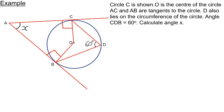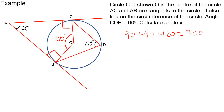The angle at the center is twice the angle at the circumference, so this is 120 — double 60. Looking at quadrilateral ABOC, the angles I know are 90, 90, and 120, which add up to 300 degrees. Angles in a quadrilateral add up to 360, so to get X, I do 360 take away 300. X is going to be 60 degrees.